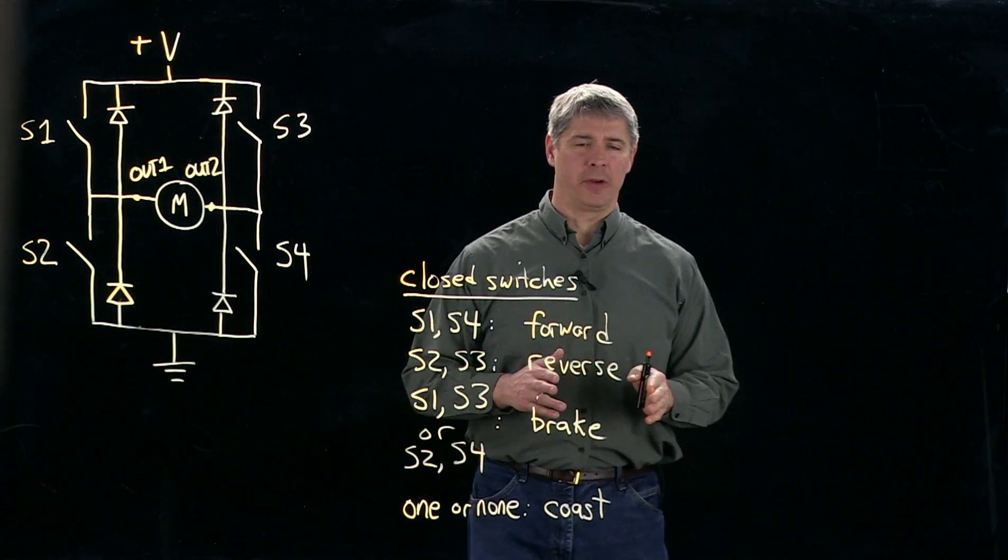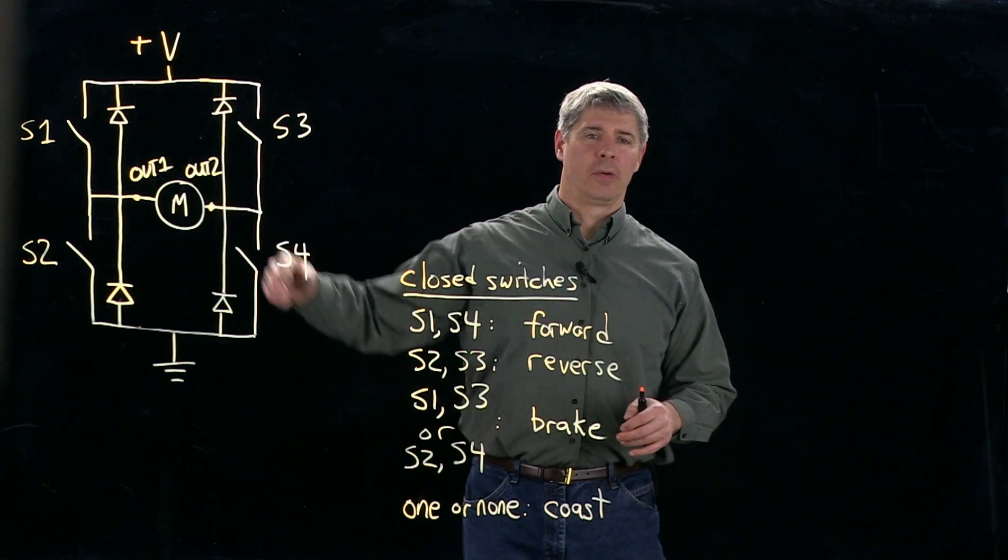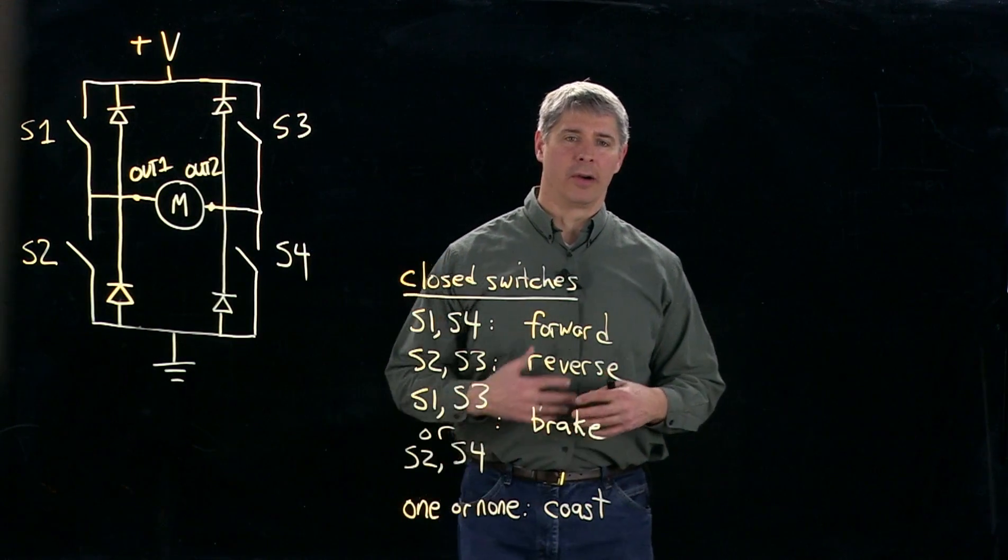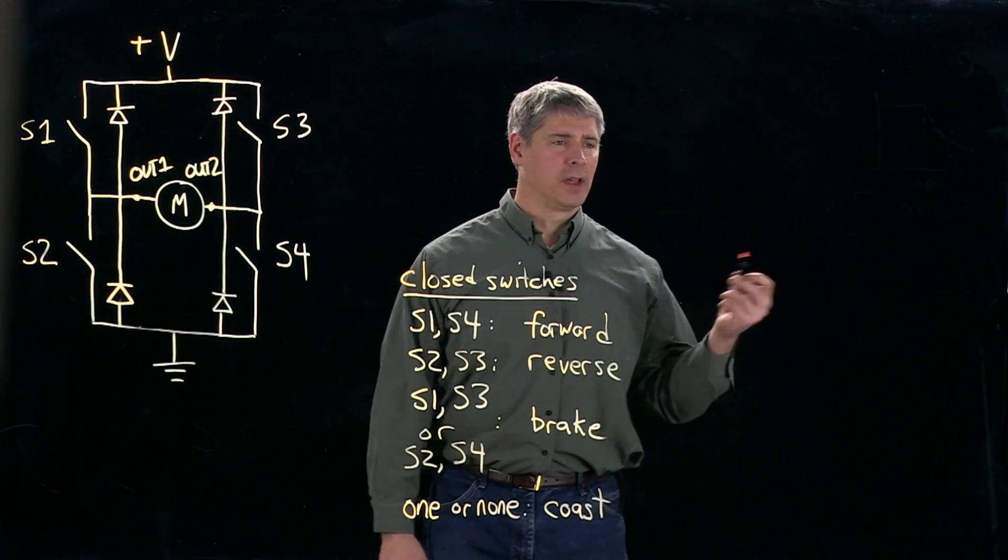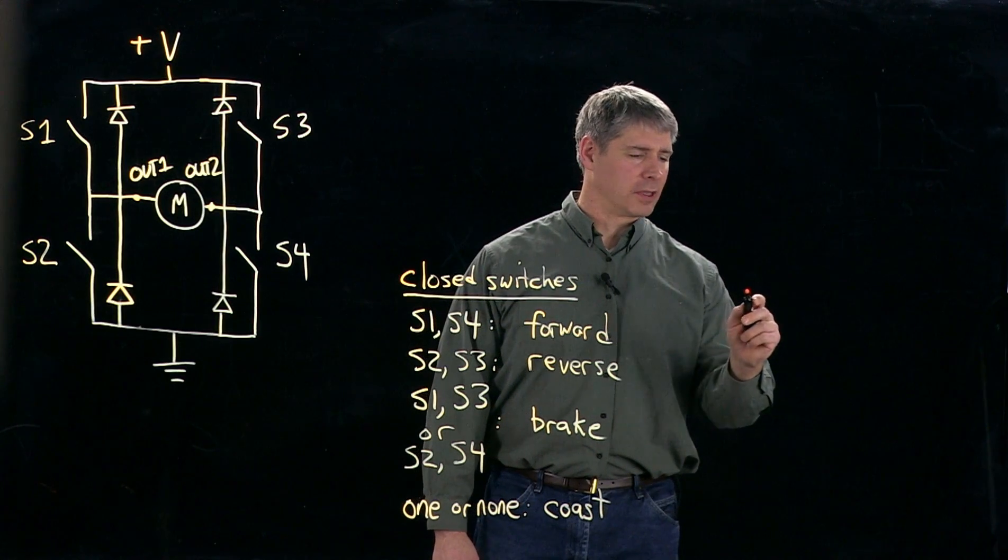And then your PWM signal and any other digital logic that you give to it will just control whether out one and out two are high, low, or turned off or shorted to each other. So the logic table for a typical H-bridge would look something like this.